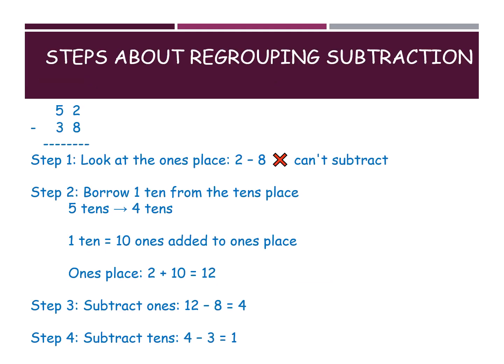Now, how to do regrouping subtraction step by step. We are taking 52 and 38, writing the tens and ones places. Look at the ones place: 2 and 8. We can't subtract because the top number 2 is smaller. That's why we borrow 1 ten from the tens place. So 5 tens becomes 4 tens, and 2 becomes 2 plus 10, which equals 12.